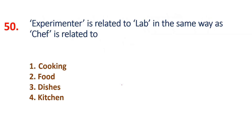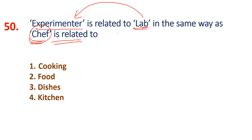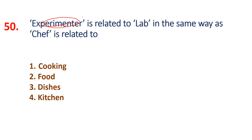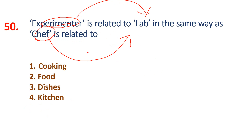Last question: Experimenter is related to Lab. In the same way, Chef is related to what? Very simple — an experimenter experiments in a lab. Similarly, a chef cooks in a kitchen. So the answer is Kitchen — option 4.